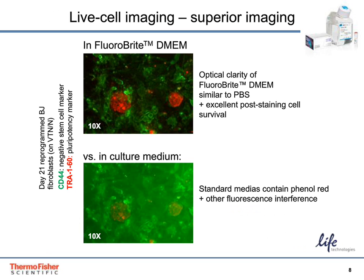This slide describes the merits of the FluoroBright DMEM medium. The FluoroBright DMEM medium is phenol-red free and therefore minimizes autofluorescence while maintaining the cells in a healthy state during the imaging process. The optical clarity and fluorescence interference is superior when images of 21-day-old reprogrammed colonies in standard medium on the bottom panel are compared with those in the FluoroBright medium on the top panel.